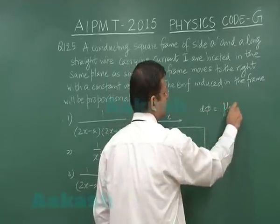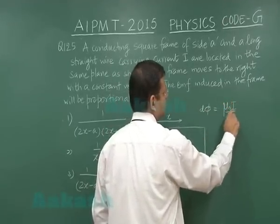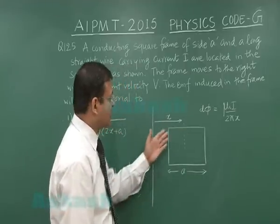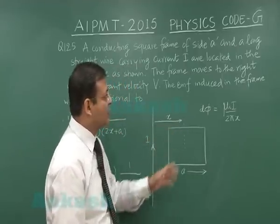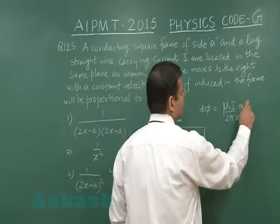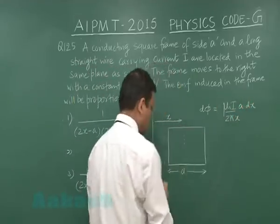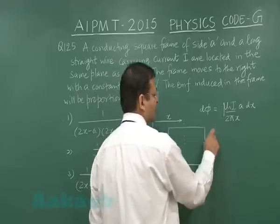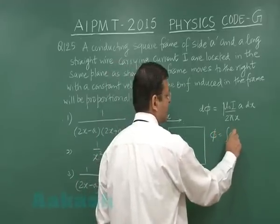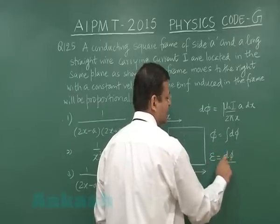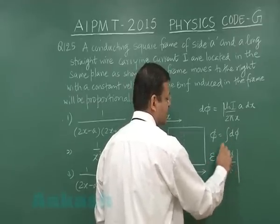Say at a distance x you are taking a strip of dx. So what is the magnetic field there? Mu not I by 2 pi x. And what is the small area? You can take a dx. Now you integrate this thing, entire thing from some particular fixed value, say l to l plus a. That will give you the flux. Flux is integration of this d phi and then finally whatever emf you want, that is basically the differentiation of that thing, mod of that.